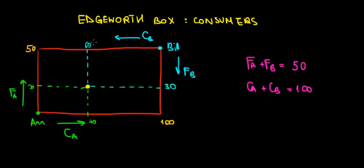Let's see if that works out. 60 units of clothing of Bill plus 40 units of clothing of Ann at the same dot adds up to 100 units of clothing in total. So that works out. And by the same logic, 20 units of food of Ann plus the 30 units of food of Bill adds up to the 50 units of food in total. So that works out as well.